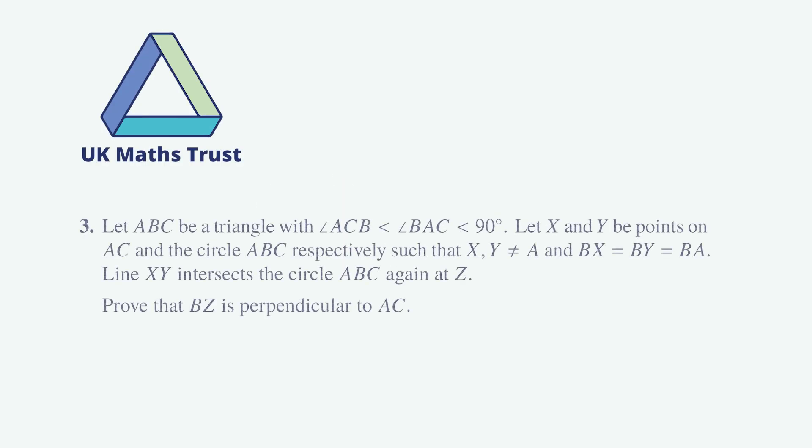Problem 3. Let ABC be a triangle with angle ACB less than angle BAC less than 90 degrees. Let X and Y be points on AC and the circle ABC respectively such that X and Y are not equal to A and BX is equal to BY which is equal to BA. Line XY intersects the circle ABC again at Z. Prove that BZ is perpendicular to AC.